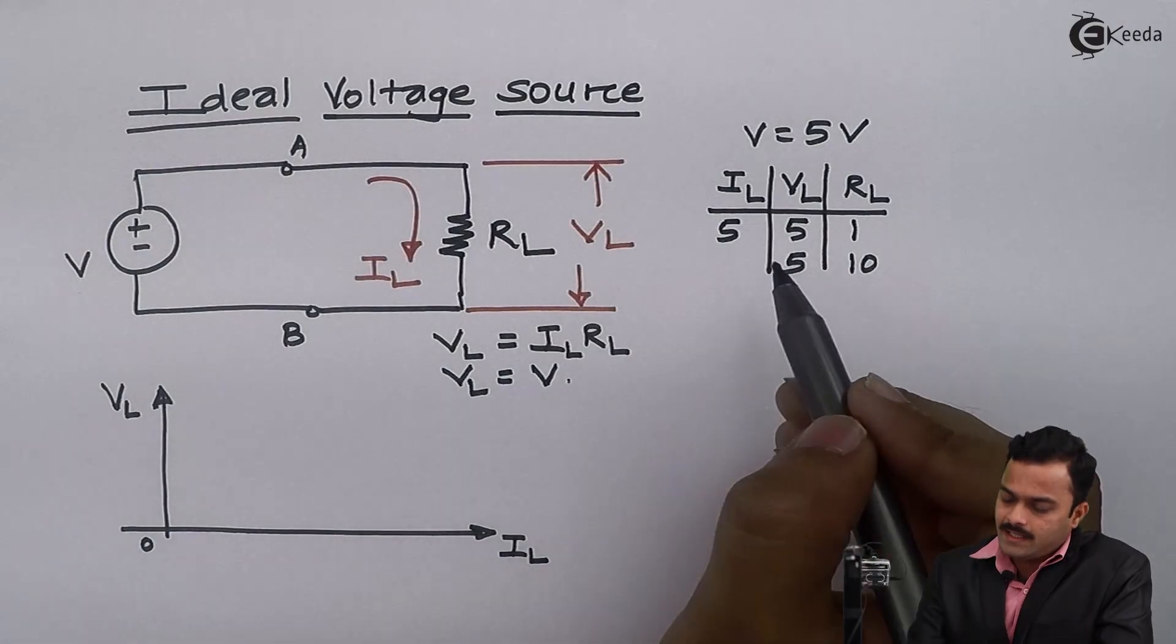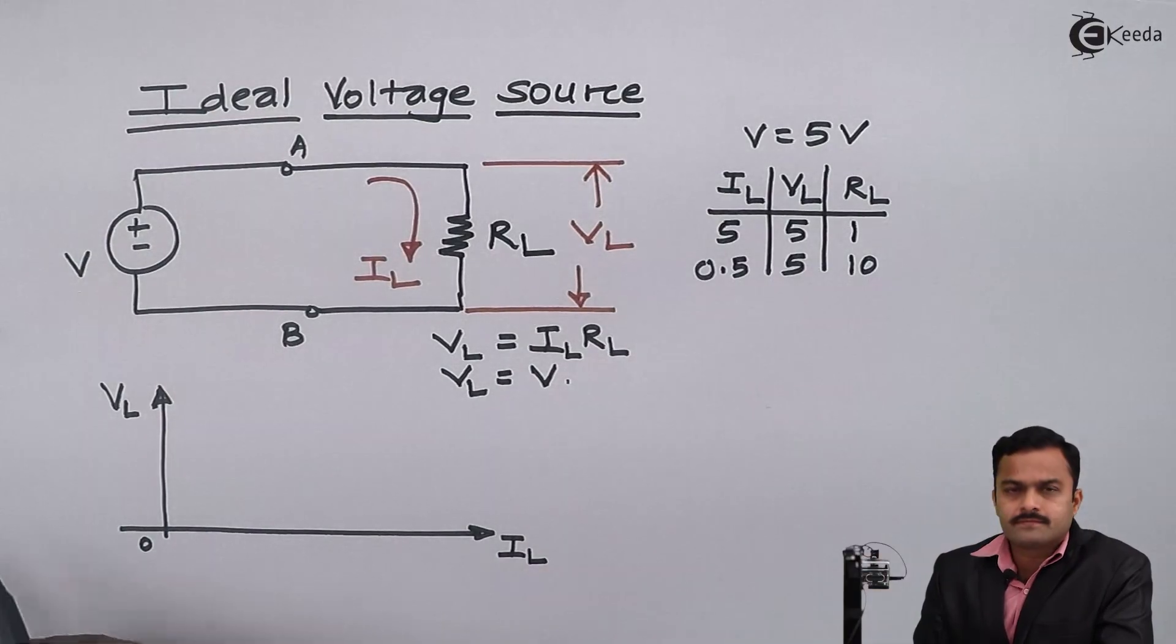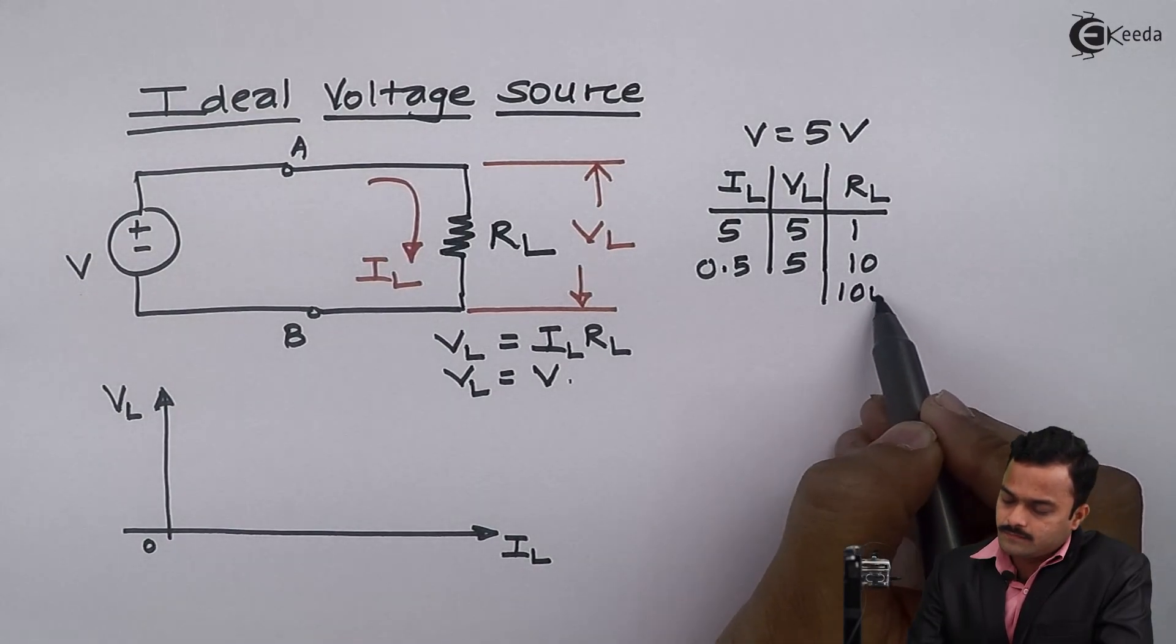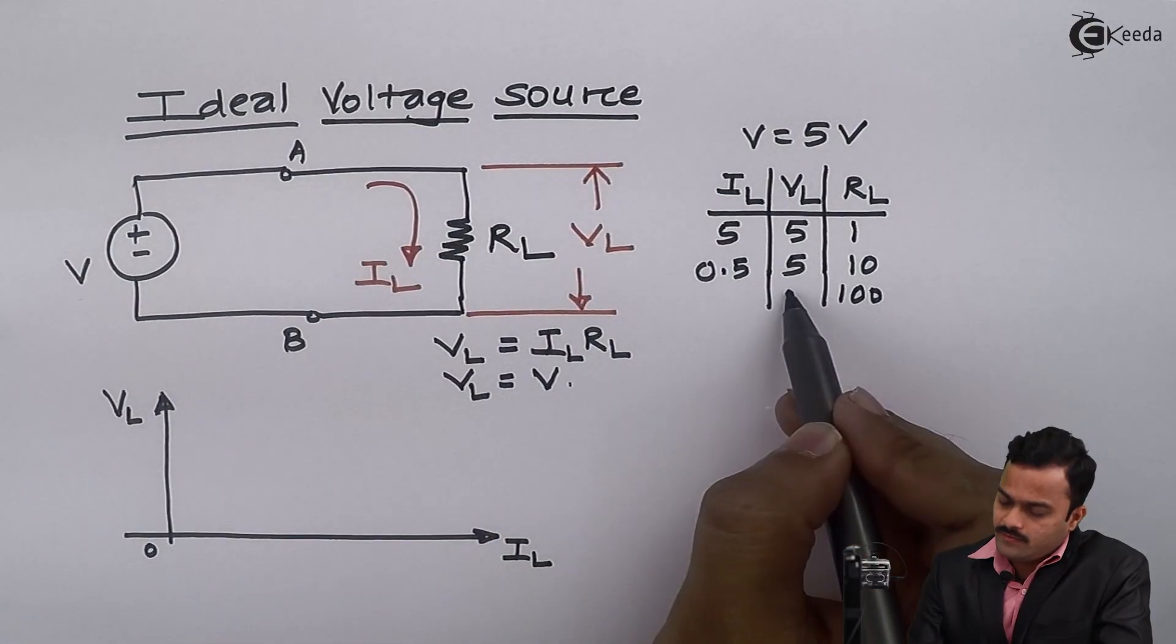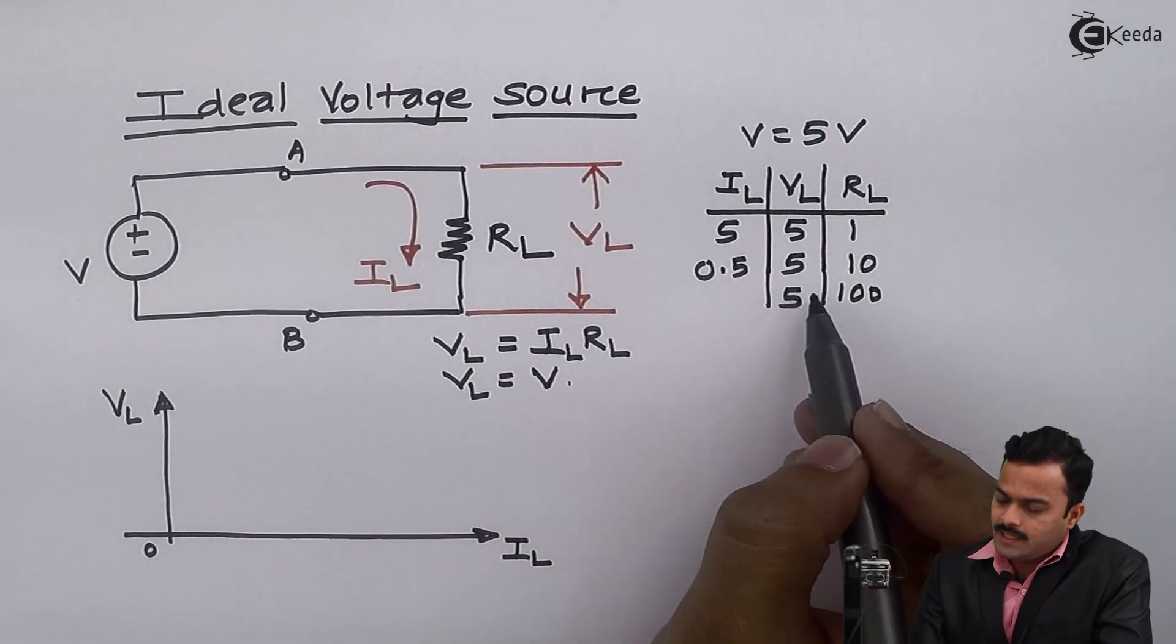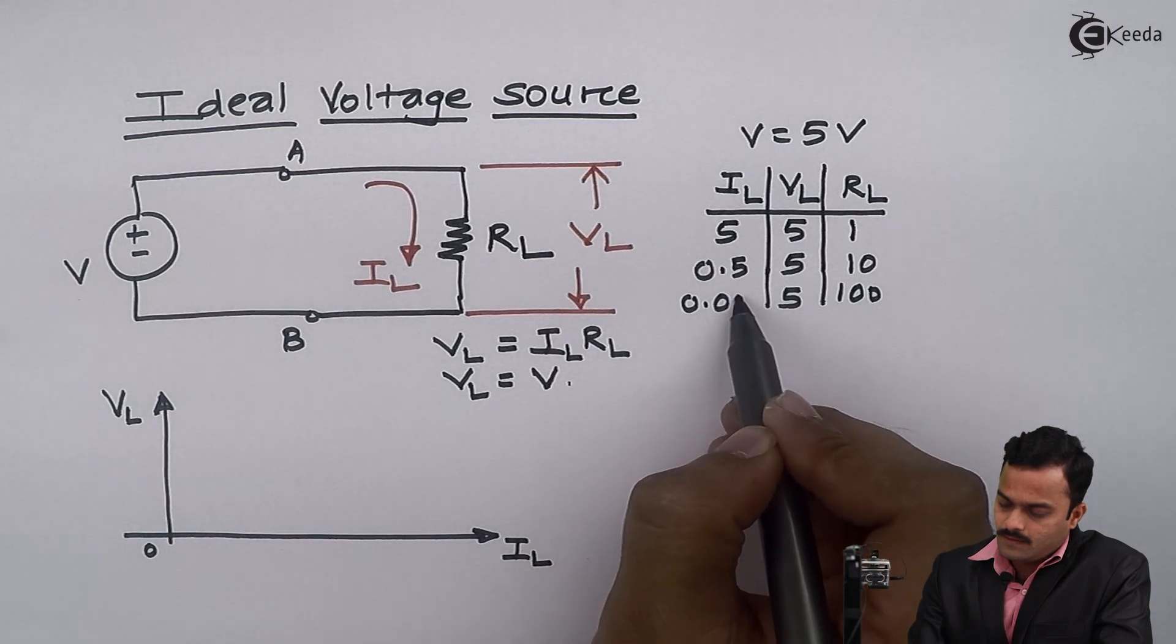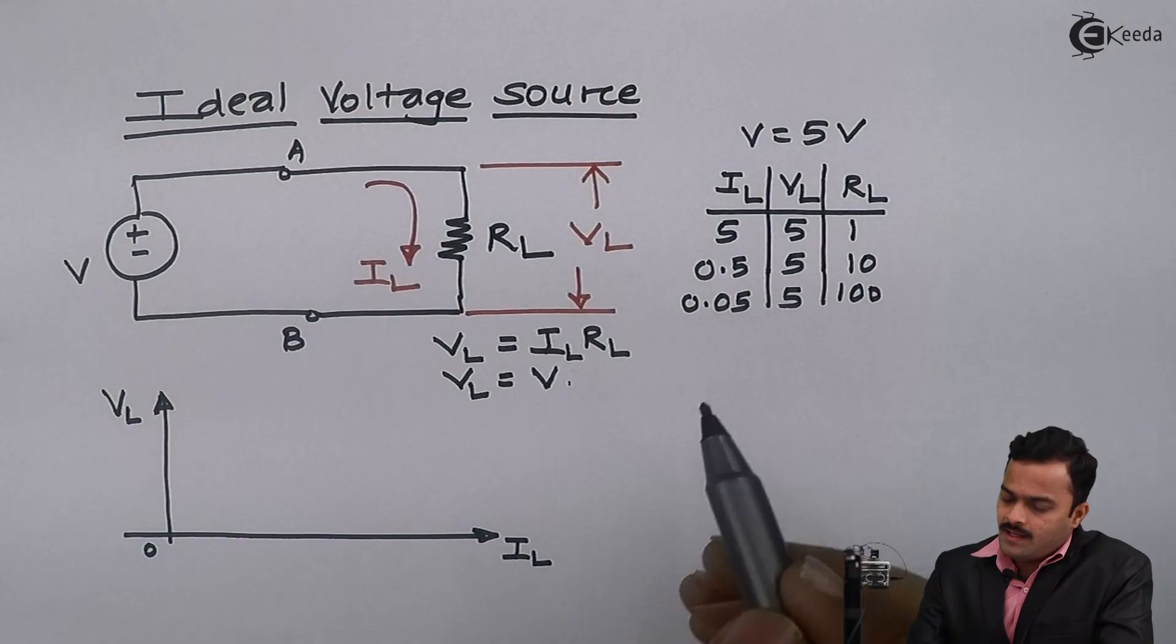One more value we can take - let's take RL as 100 ohm. Battery remains unchanged at 5 volts, so IL is VL by RL, I'll get answer 0.05 ampere.